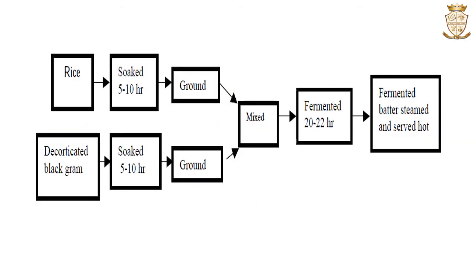This image shows a flowchart of the preparation procedure for Idli. Rice and black gram are soaked, ground, mixed, and fermented. After fermentation, the fermented batter is steamed and served hot.